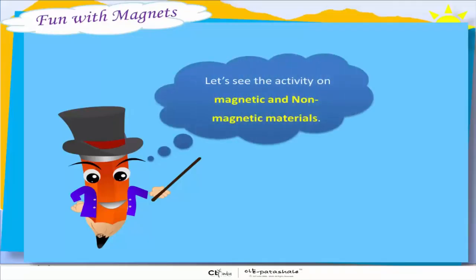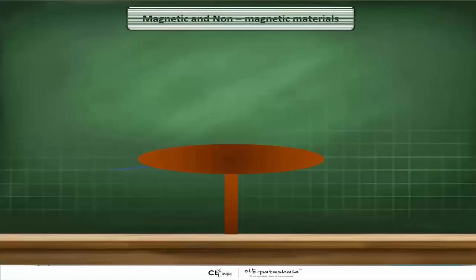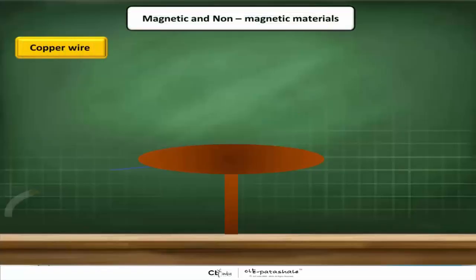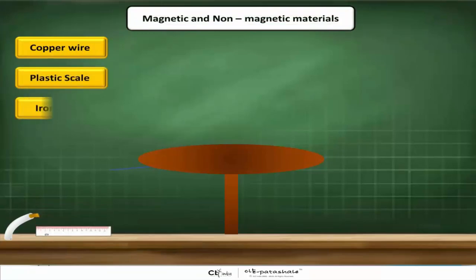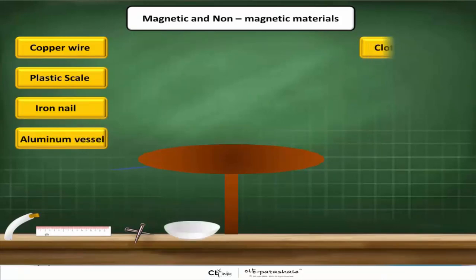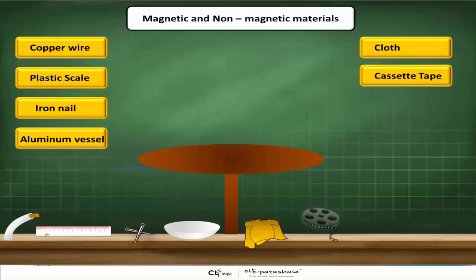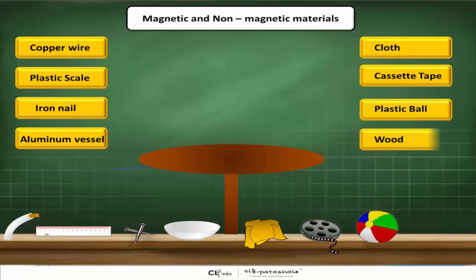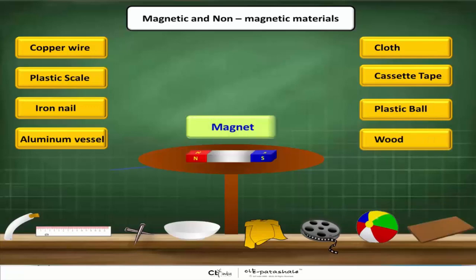Let's see the activity on magnetic and non-magnetic materials. The components required for the activity are copper wire, plastic scale, iron nail, aluminium vessel, cloth, cassette tape, plastic ball, and wood. And finally, a magnet.